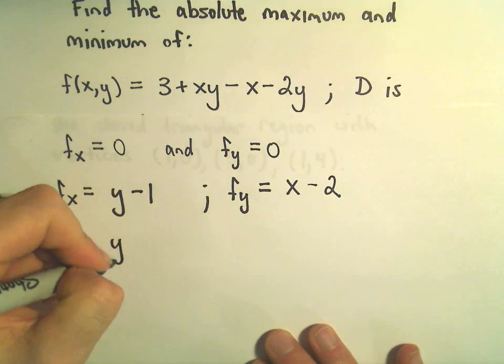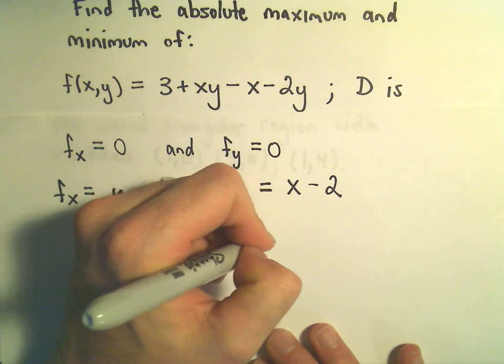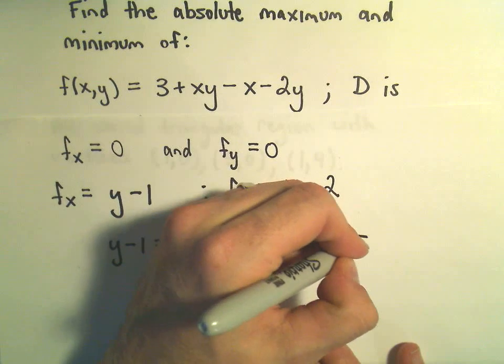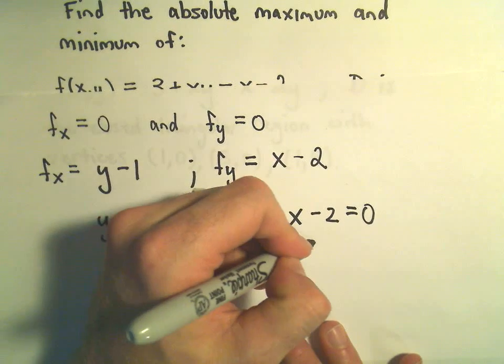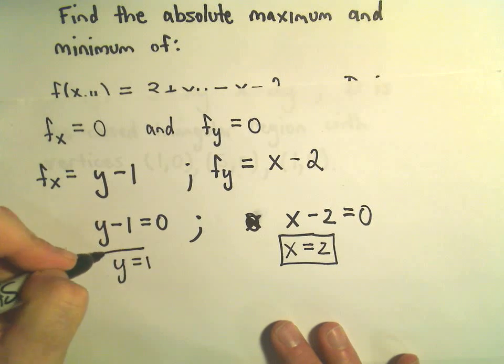This isn't too bad. We have to set each one of these equal to zero and we have to solve. So y minus 1 equals 0, and x minus 2 equals 0. Obviously not too bad equations here: x equals 2, y equals 1.